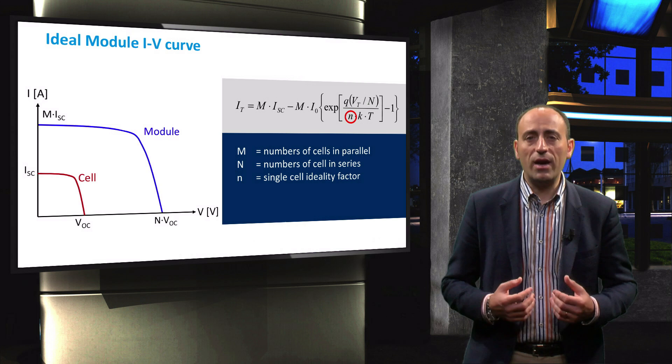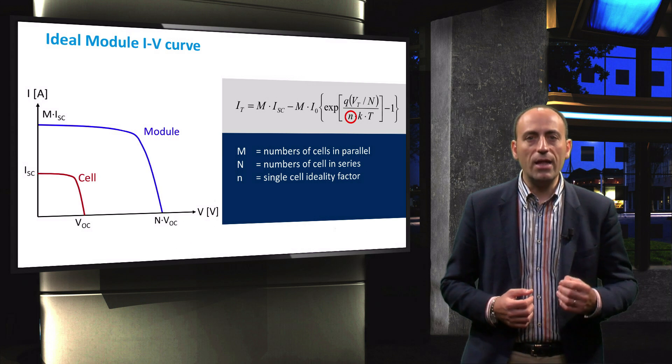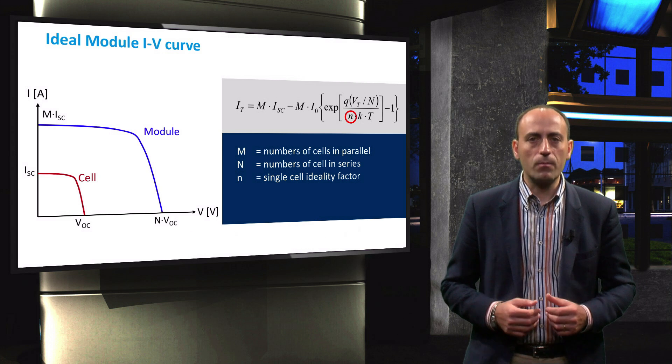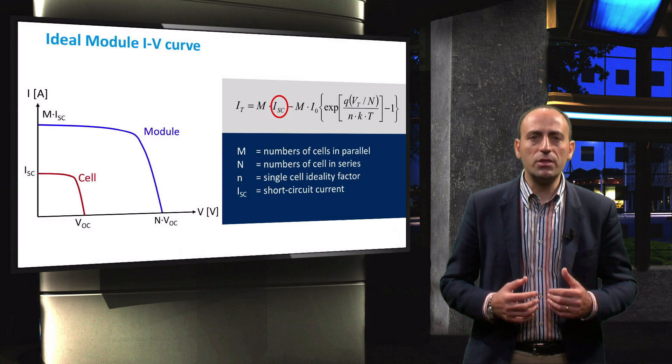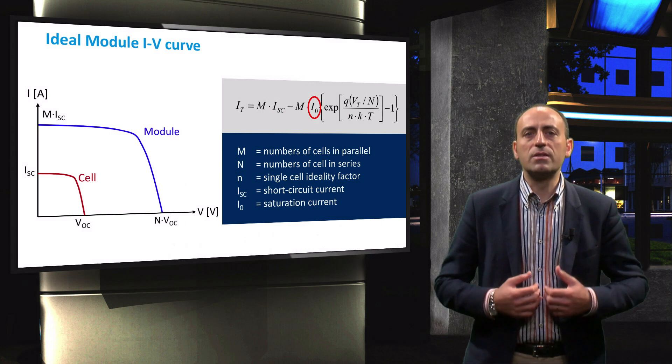This is justified having assumed that all cells in the module are identical and operating under the same illumination and temperature conditions. ISC is the short circuit current of a single solar cell and I0 is the saturation current.